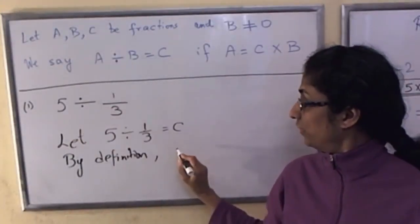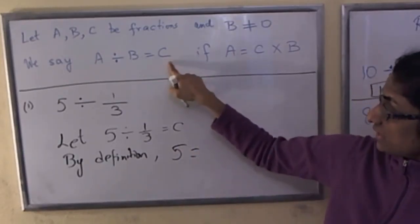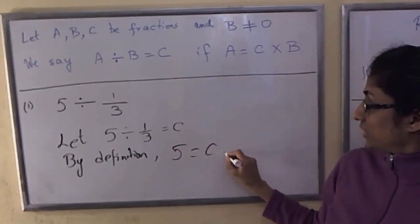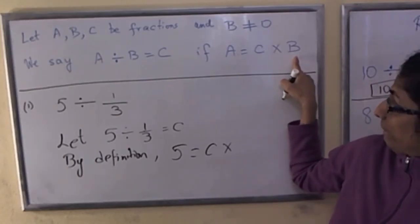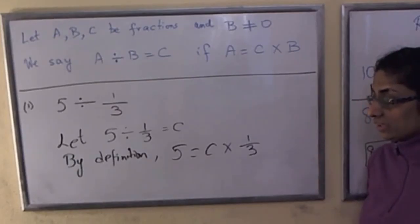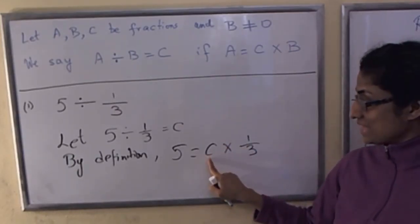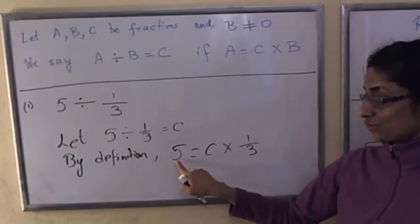a is like your 5. 5 equals c, c is exactly the c, times b. b is like your 1 third. So now we are asking, what is the value of c such that c times 1 third is 5.